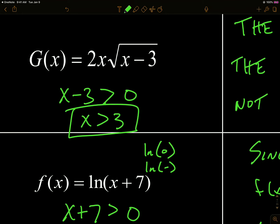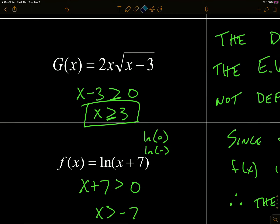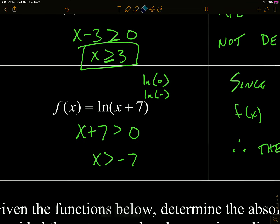I want to go back and fix something. Up here for the square root function, the radicand can actually be zero — so the domain is all x greater than or equal to three. Three is okay, because if I have three minus three I get the square root of zero, which is zero, and that's not undefined. You can't square root a negative number, but zero is fine. So I just wanted to go back and fix that.